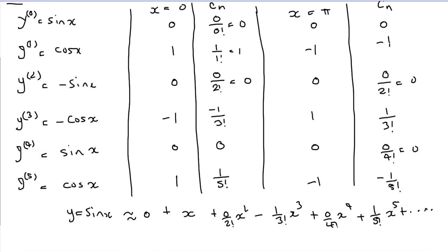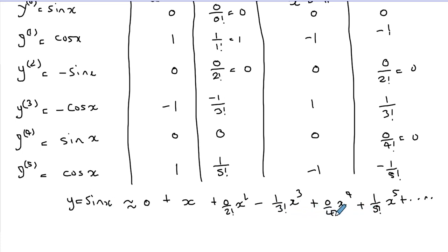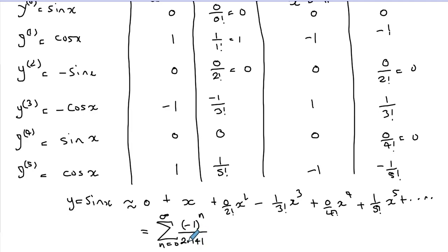I would like you to convince yourself that the compact form of this Maclaurin series for sine x is the summation from n = 0 to infinity of (−1)^n / (2n+1)! times x^(2n+1). You can see the non-zero factorials are 1!, 3!, 5!, 7!, giving odd-number factorials, which is why we have that expression.